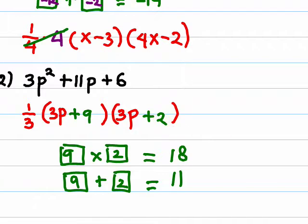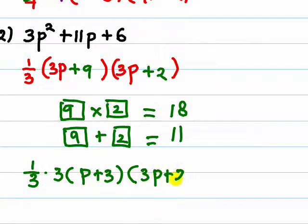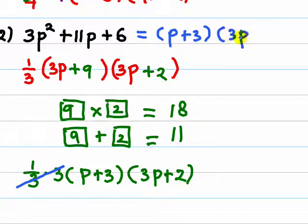Again, now we try to simplify by factoring out 3 from this. So 1 third, we factor out 3 outside, p plus 3 times 3p plus 2. So the conclusion is that this trinomial can be factored as p plus 3 times 3p plus 2.